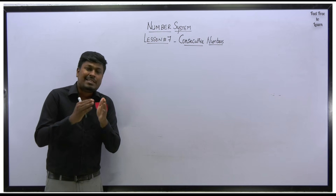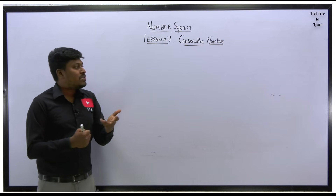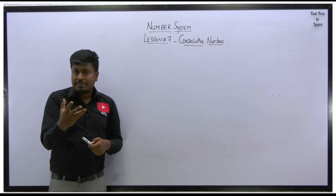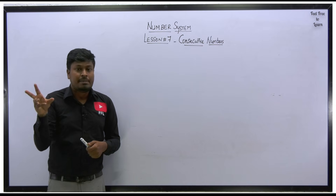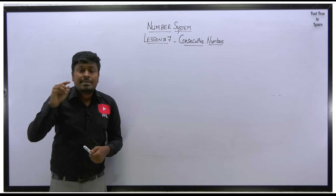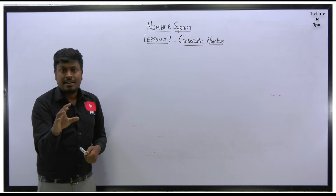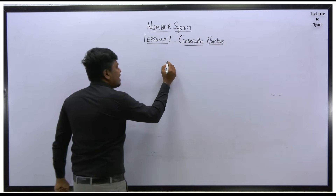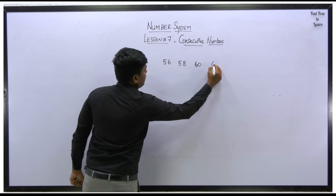In this lesson number seven we are going to learn an important concept called consecutive numbers. Before solving a question based on consecutive numbers, you have to know what consecutive numbers are. Consecutive numbers is a set of series which follows some logic. For example, if all numbers are even it is called consecutive even numbers; if all numbers are odd it is called consecutive odd numbers; and if a series starts from 1, 2, 3, 4 etc., it is called consecutive natural numbers.